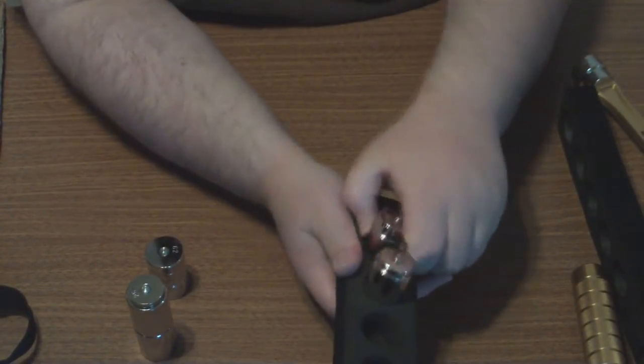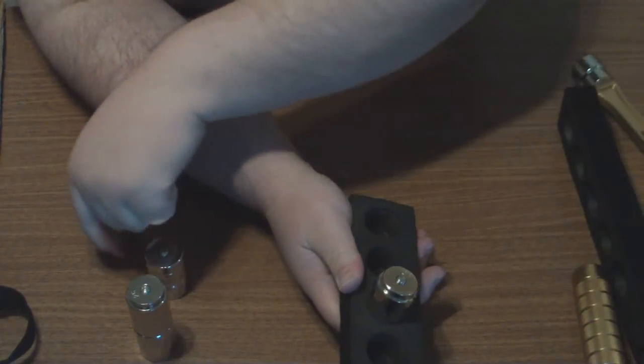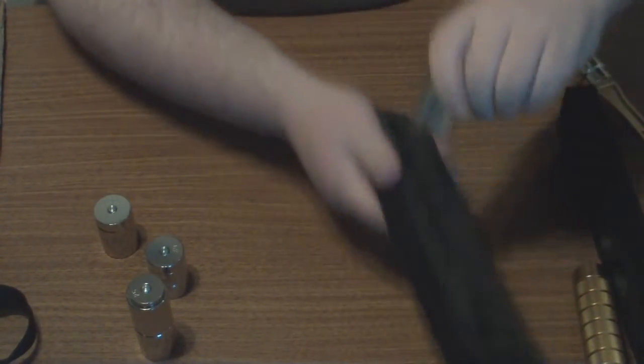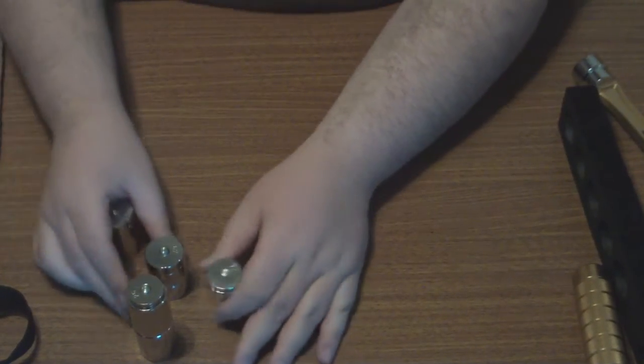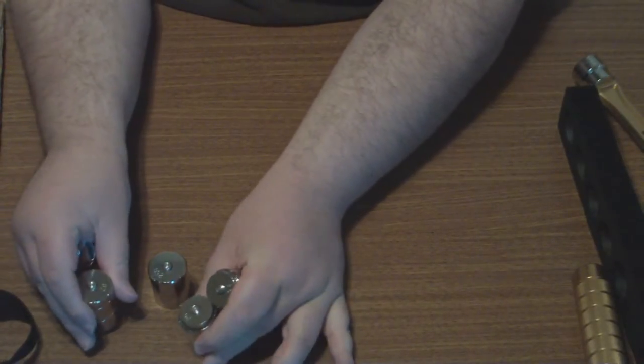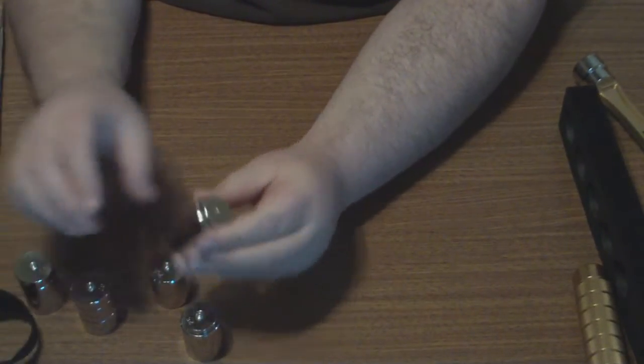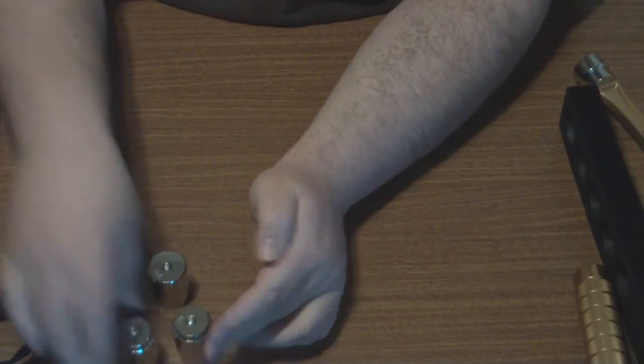It looks like it comes with a full set of weights here. It's about maybe two or three pounds, which should be enough to offset pretty much anything you're going to put on here.